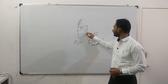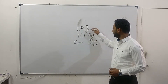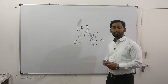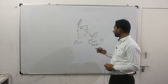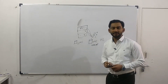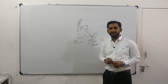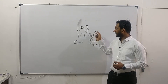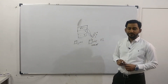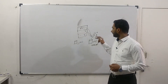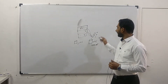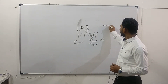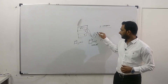All ESXi hosts can see these three datastores and I have some virtual machines running on them. Let's assume a virtual machine requires additional storage — I need to increase the C drive or D drive capacity — but I don't have capacity on the datastore where this VM is residing, and I don't want any downtime for this virtual machine.